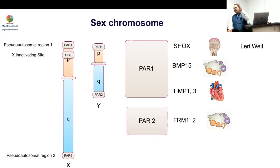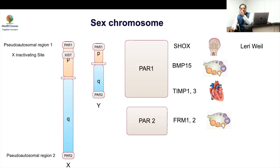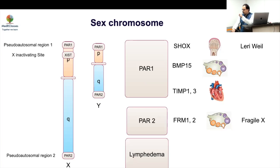Very distal defects in the Xq region are considered to be premature ovarian failure rather than Turner syndrome. This distinction matters because labeling someone as Turner syndrome has implications for monitoring — including cardiac surveillance and other assessments. So depending on which region is affected, the clinical manifestations will differ accordingly.